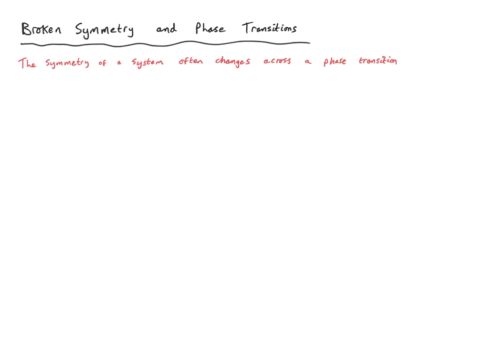In this lecture we'll be discussing broken symmetry and phase transitions. We'll start by exploring the experimental fact that the symmetry of a system often changes across a phase transition. Consider the classical transition from liquid water to solid ice. Liquid water has a high symmetry — the symmetry of continuous spatial translations and rotations. However, when we cool down the liquid, we undergo a phase transition to solid ice, where we have a discrete symmetry of the crystal lattice. We no longer have continuous translations and rotations. The crystal is periodic — we can take a unit cell and translate it by one lattice vector — but this is a discrete rather than a continuous symmetry.